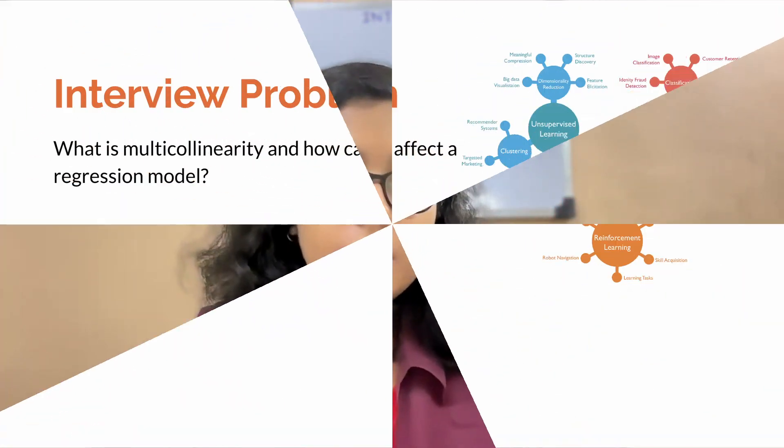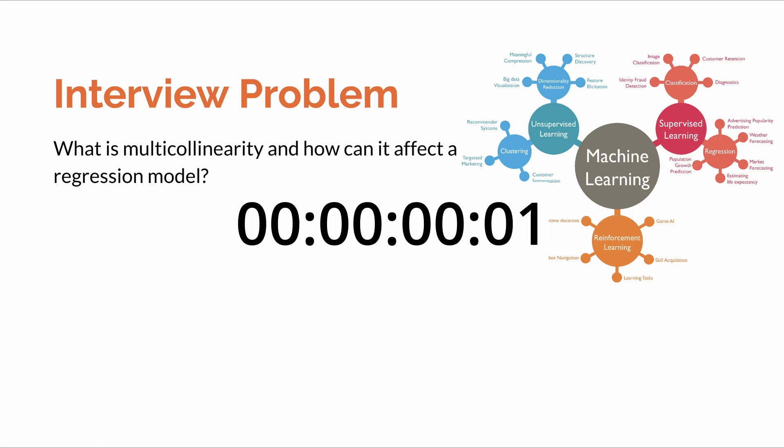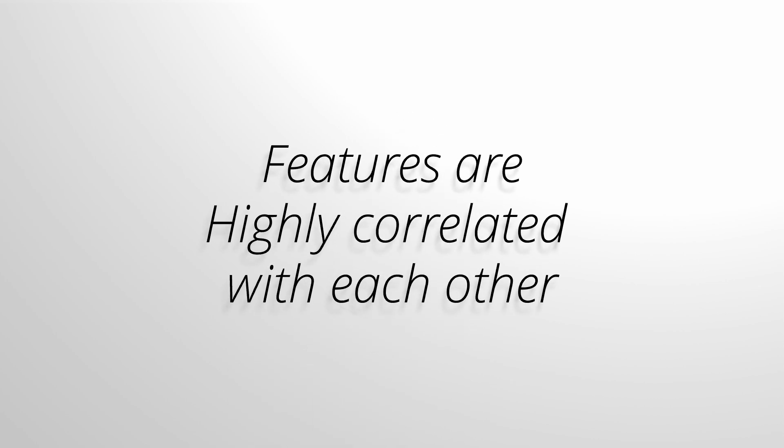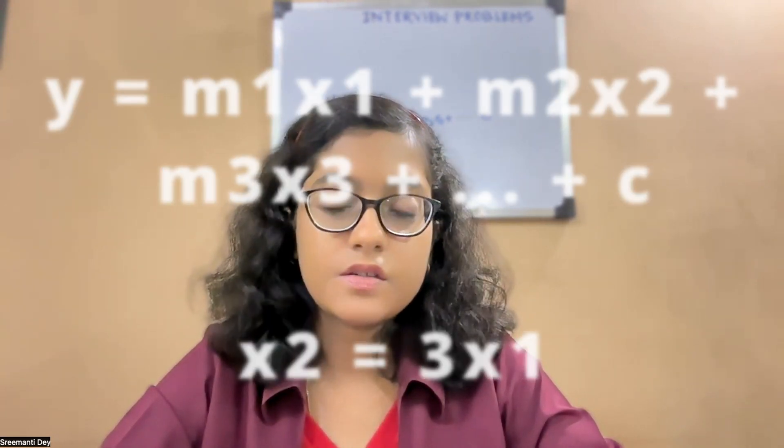The next question: what is multicollinearity and how can it affect a regression model? Multicollinearity occurs in a regression model when two or more of the independent variables are highly correlated with each other. For example, in y = m1x1 + m2x2 + … + c, if x2 = 3*x1, then whenever x1 changes we know exactly how x2 will change — one predictor variable can be linearly predicted from the others with very high accuracy. This means the effective number of features is actually n minus 1, because x2 is highly correlated with x1, leading to redundancy among the predictors.